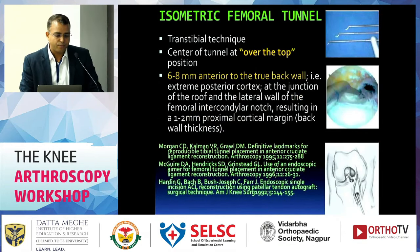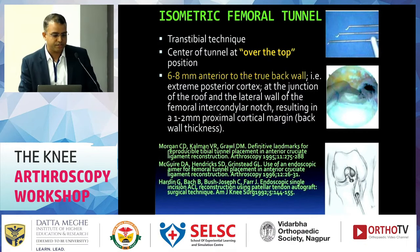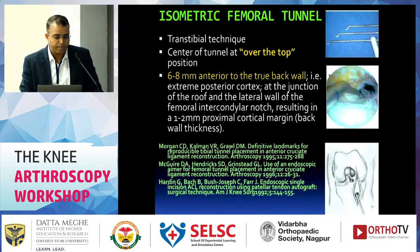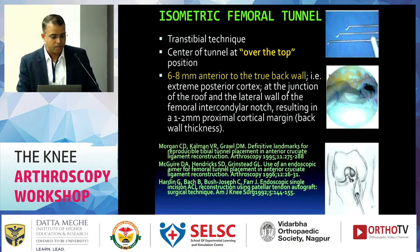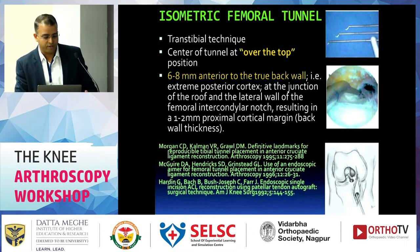For the isometric femoral tunnel, you can achieve it by the trans-tibial technique, with the center of the tunnel at the over-the-top position. The center of the tunnel should be 6 to 8 mm anterior to the true back wall — that is, the extreme posterior cortex at the junction of the roof and lateral wall of the femoral intercondylar notch — which will result in a 1 to 2 mm proximal cortical margin.